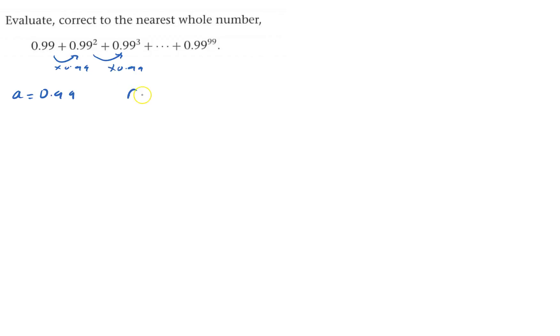That means the common ratio is 0.99, so this is a GP. Altogether we've got terms from 0.99 to the power of 1 going up to 99, so n equals 99.